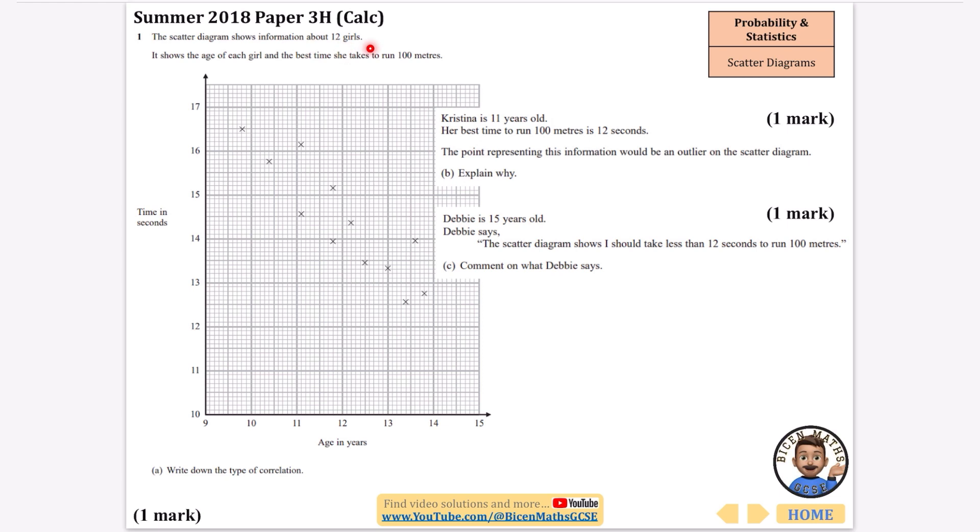This time we've got a scatter diagram about 12 girls. It shows the age of each girl and the best time she takes to run 100 meters. Part A says what is the correlation. We're just going to say it's negative because it's coming downhill.